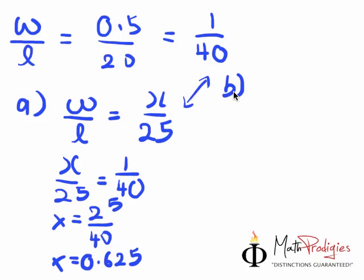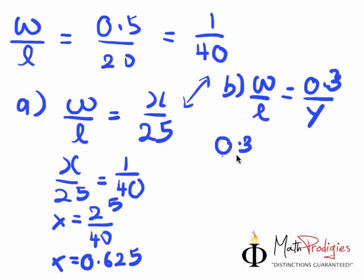And B, in order for you to find rod C's length, all you have to do is do the same thing. W over L equals to 0.3 over what? In this case, it's Y, right? So, this proportion has to be the same as this proportion, which means that 0.3 over Y has to equal 1 over 40.